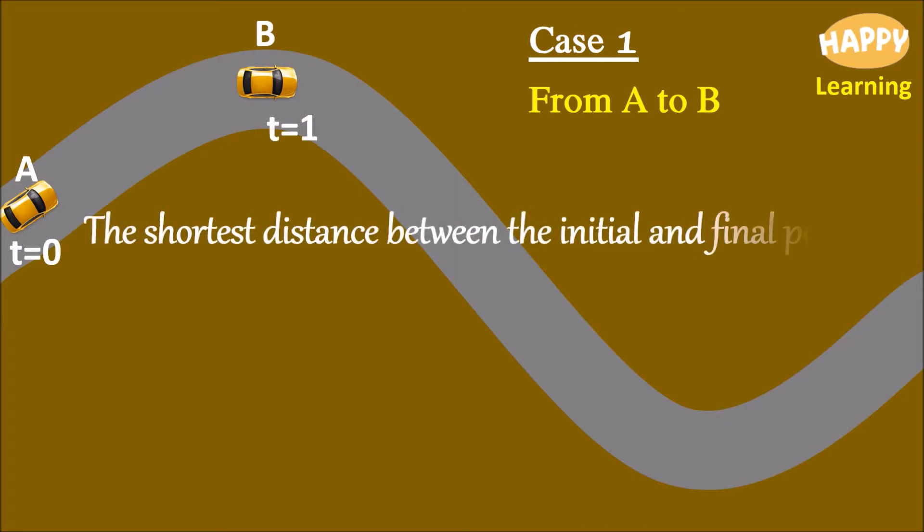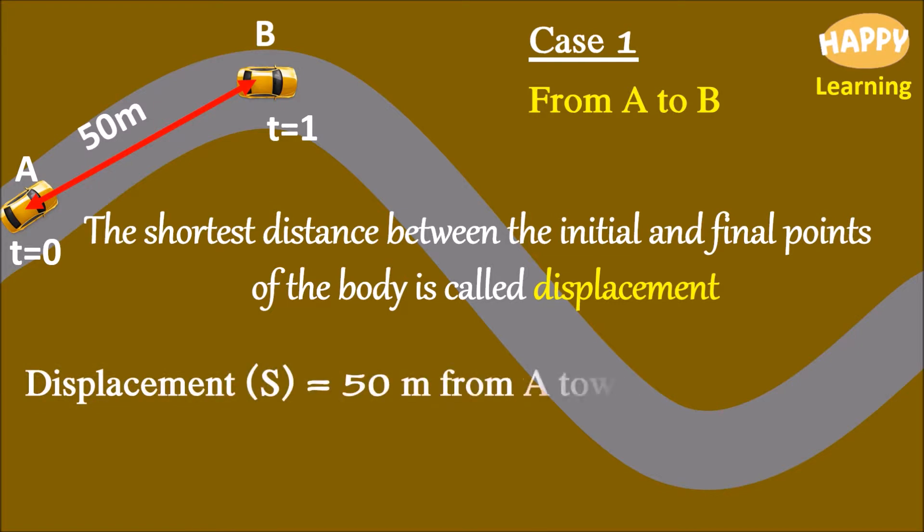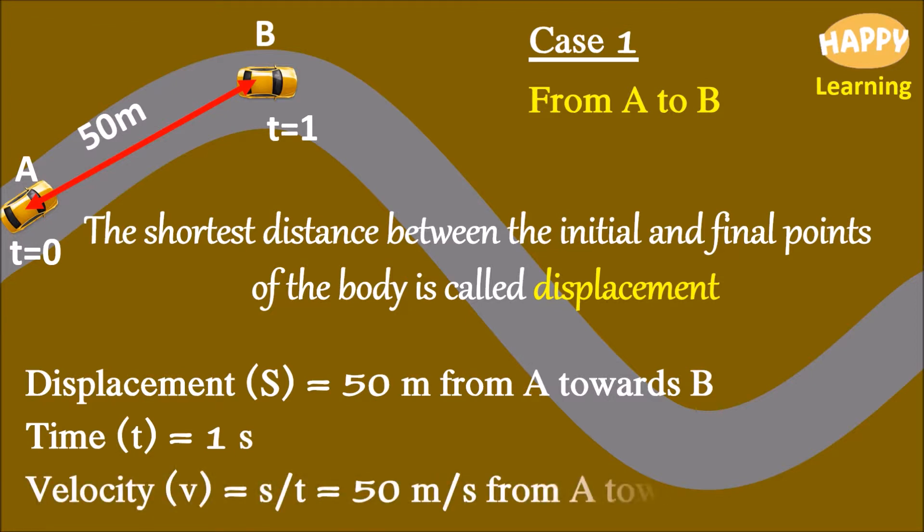The shortest distance between the initial and final points of the body is called displacement. Here, A and B are 50 meters apart. Displacement S is equal to 50 meter from A towards B. Time T is equal to 1 second. Therefore, velocity is equal to 50 meter per second from A towards B.